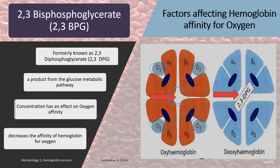In the presence of 2,3-BPG, there is decreased affinity, so there is no oxygen. In its absence, there is increased affinity to oxygen. When 2,3-BPG is present and there is no oxygen, we call that deoxyhemoglobin. And when there is oxygen present in the hemoglobin, we call that oxyhemoglobin.